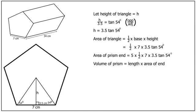And then the volume is the length of the prism multiplied by the area of the end. That's equal to 34 times 5 times a half times 7 times 3.5 tan 54 degrees. And multiplying all that out on our calculators gives 2,866.31 cubic centimetres.